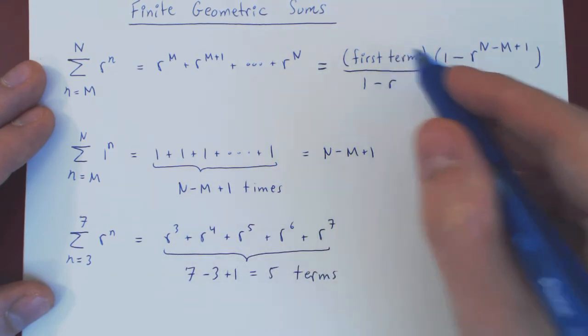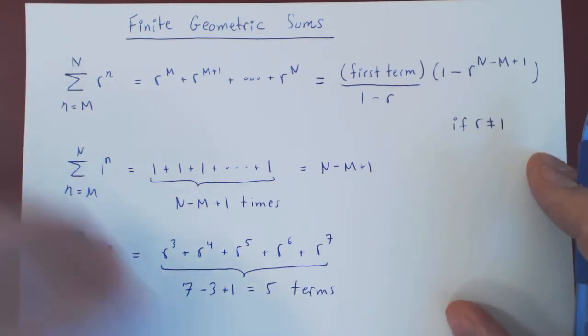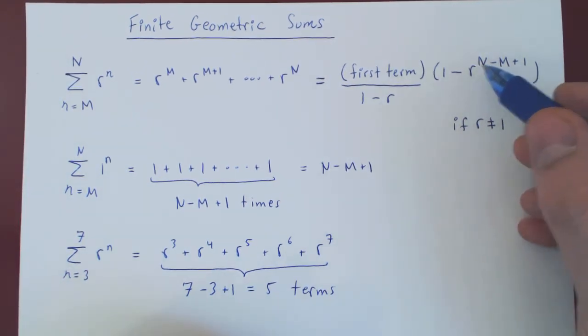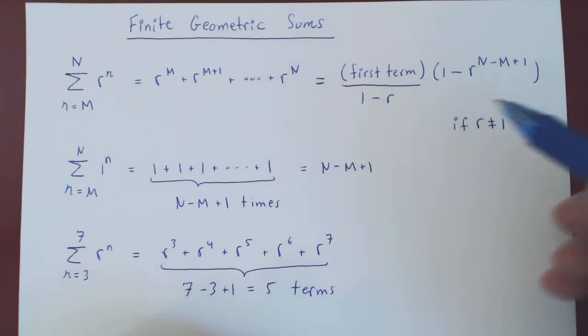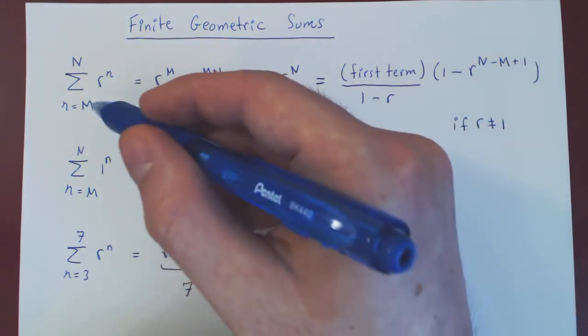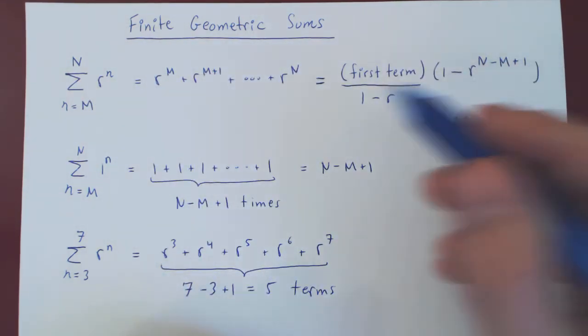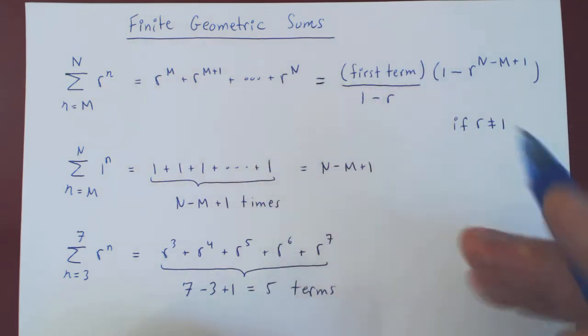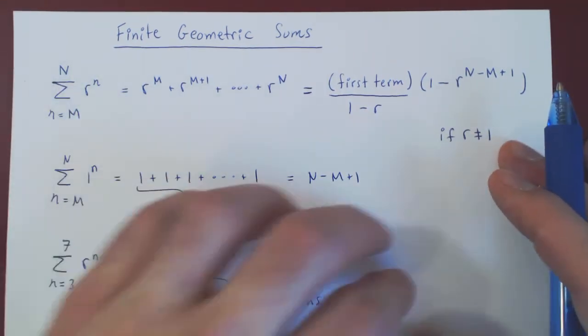And if you look at this formula, then you can even simplify it further by observing that N, the upper bound of summation, minus M, the lower bound plus 1, is simply the number of terms that you are summing. So you can squeeze that in.